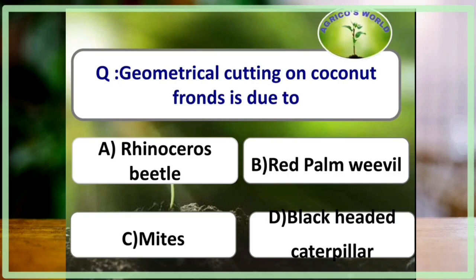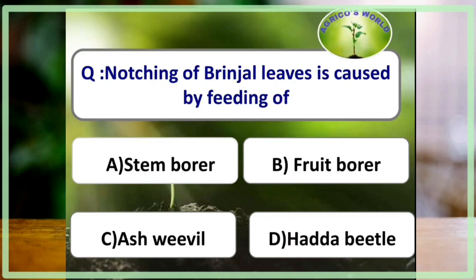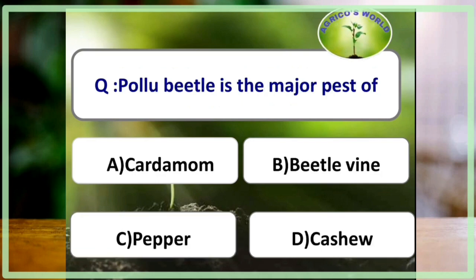Geometrical V-shaped cutting on coconut fronds is due to rhinoceros beetle, Oryctes rhinoceros. Notching of brinjal leaves is caused by the feeding of ash weevil. Pollu beetle is a major pest of pepper.